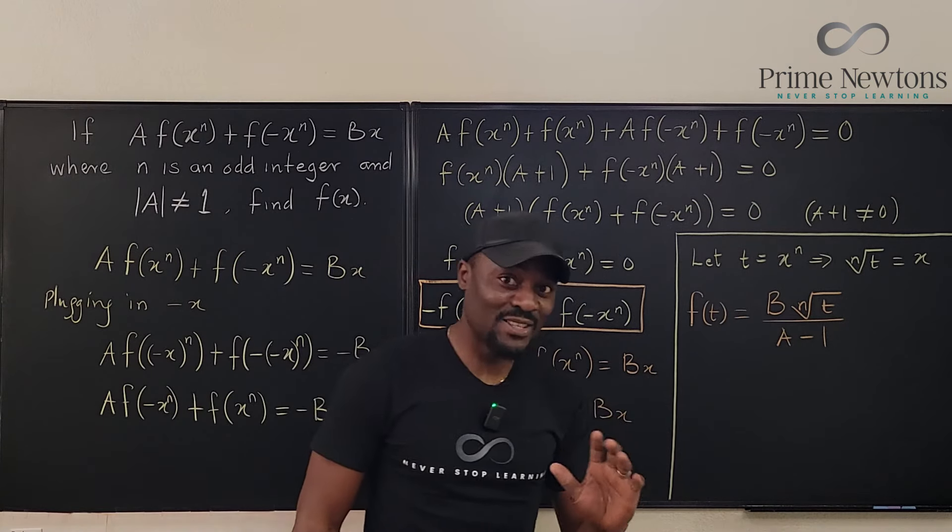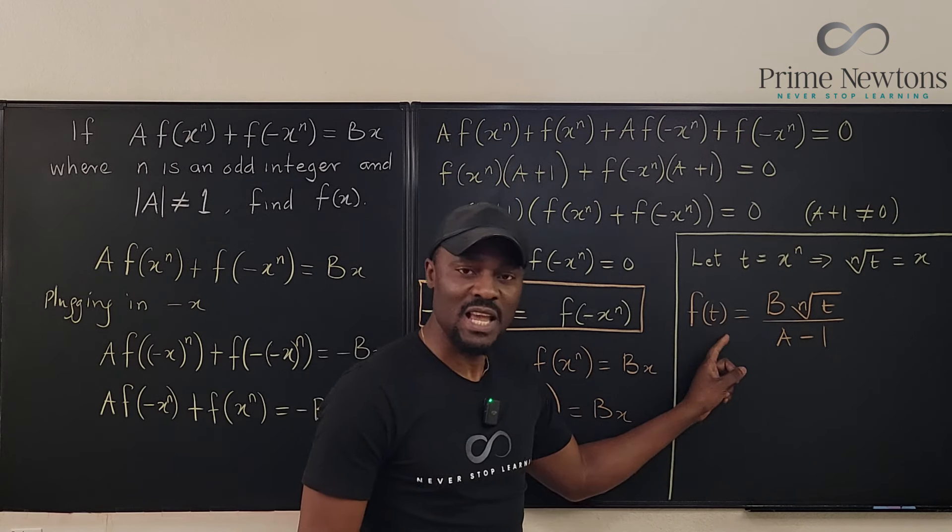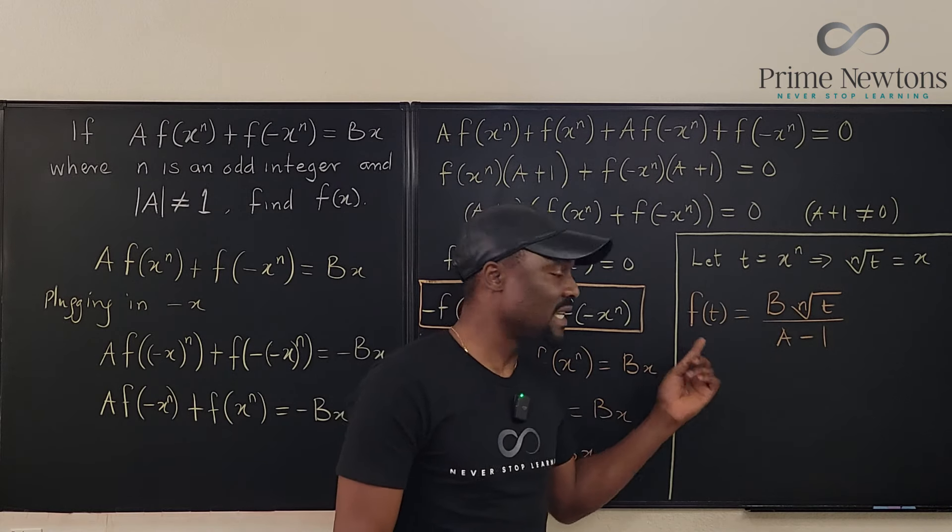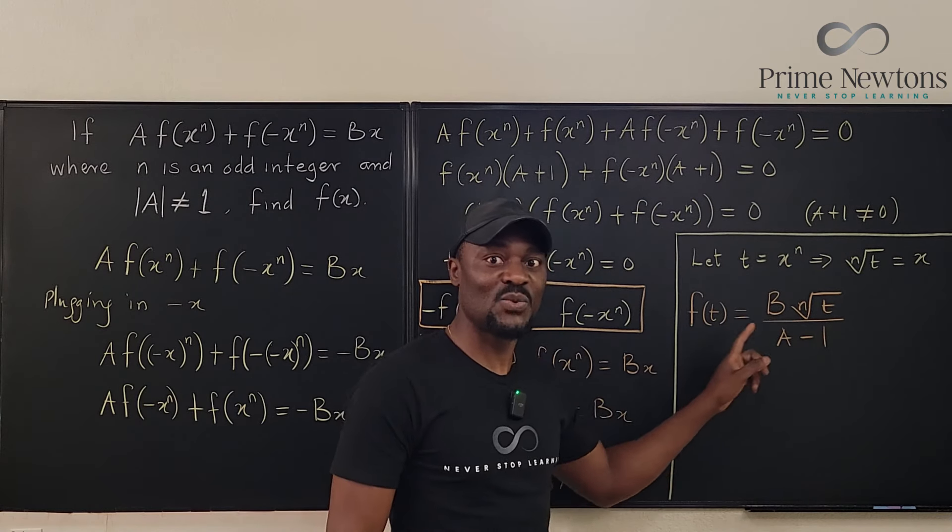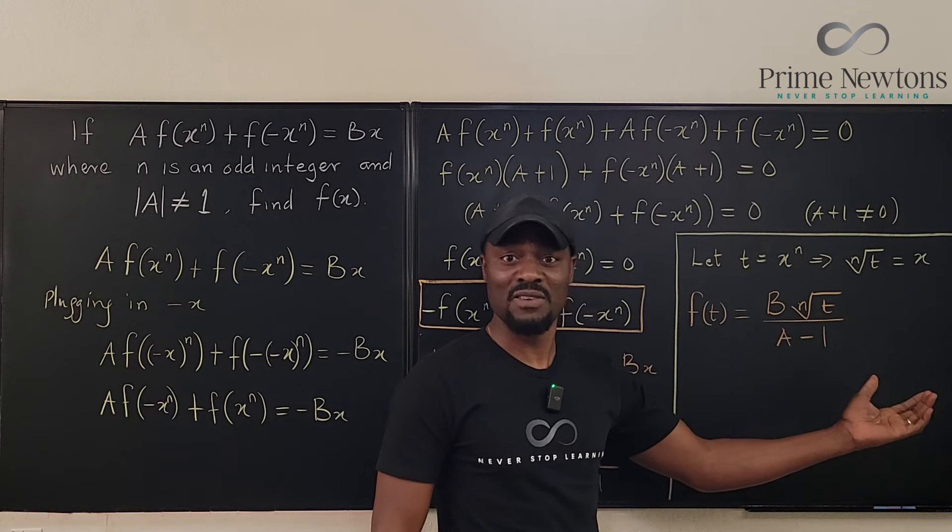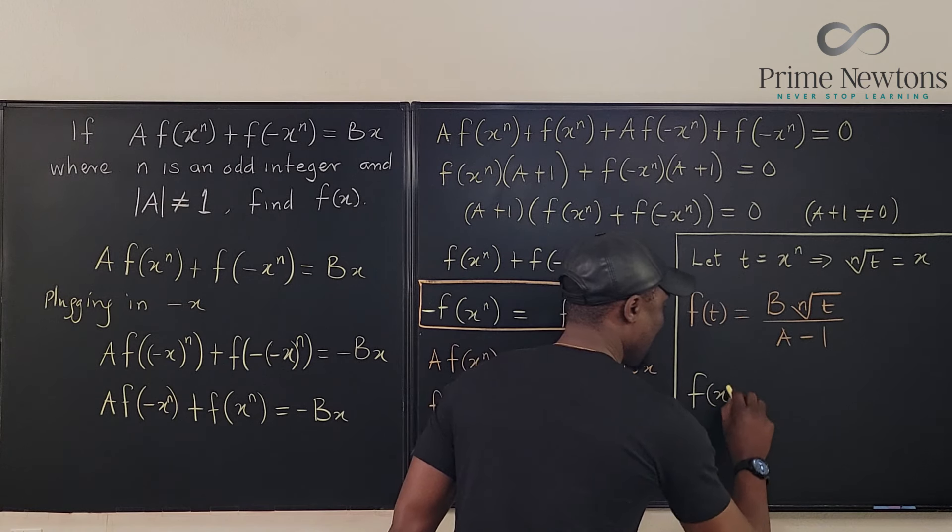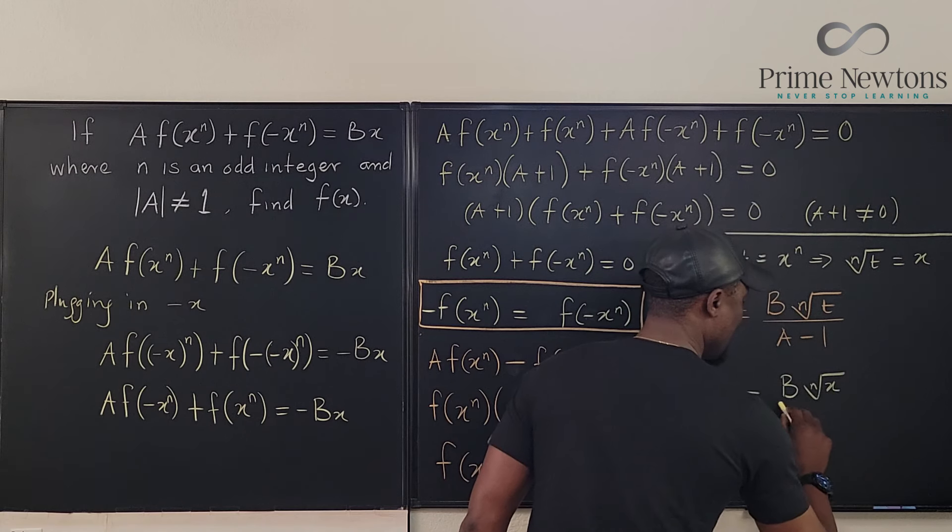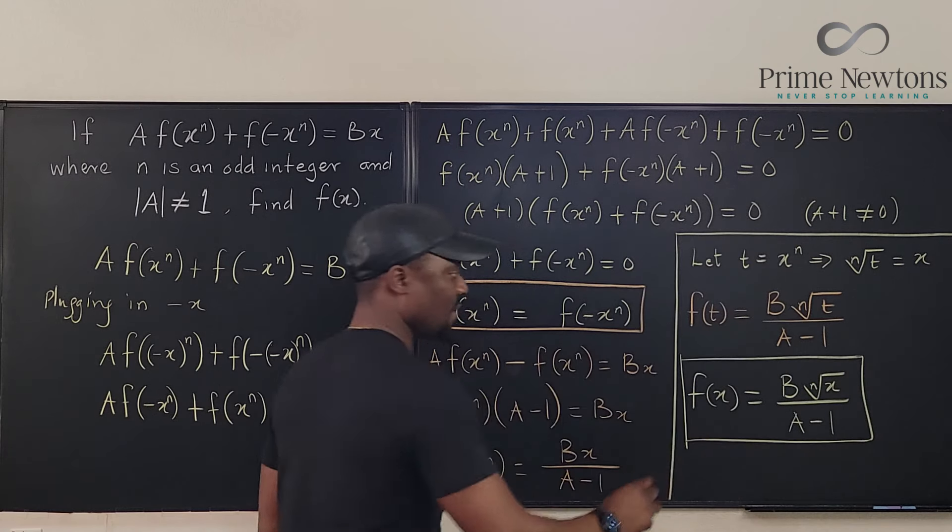Now, I always get this comment when I do functional equations and I do this substitution at the end. See, I found f(t). Remember, a function is just about what does f do to what you give to it. So if you give it t, this is what it's going to do to it. If you give it y, this is what it's going to do to it. If you give it x, this is what it's going to do to it. It's just a placeholder. You can use any variable. So I can clearly say that f(x) is equal to b times the nth root of x divided by A minus 1. This is the function we're looking for.